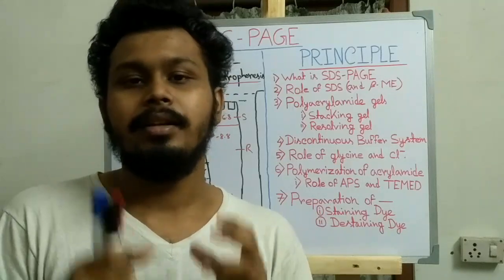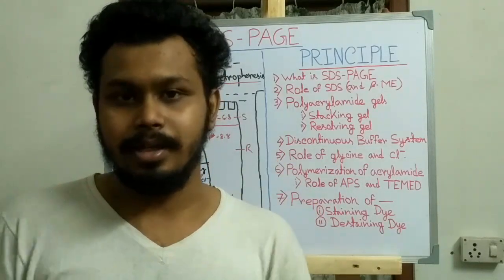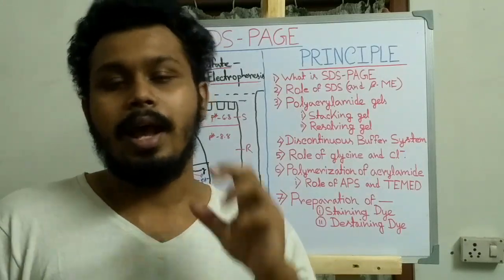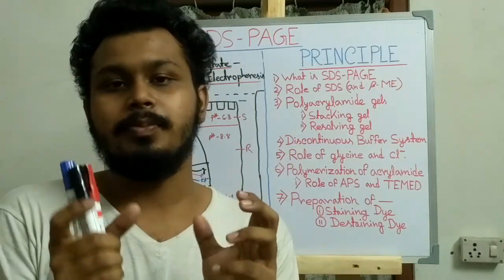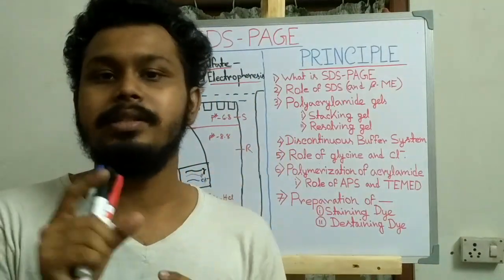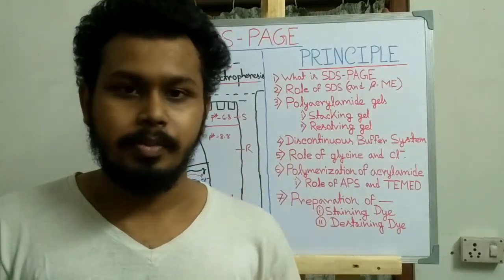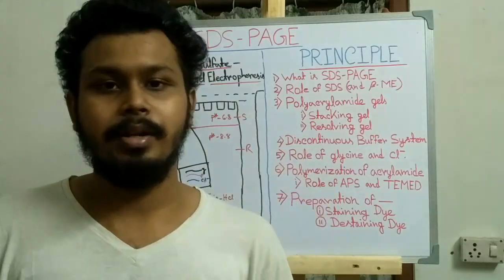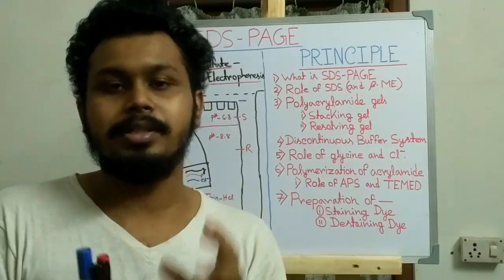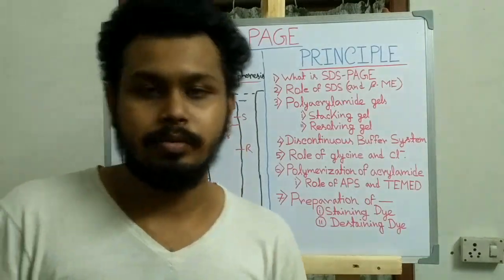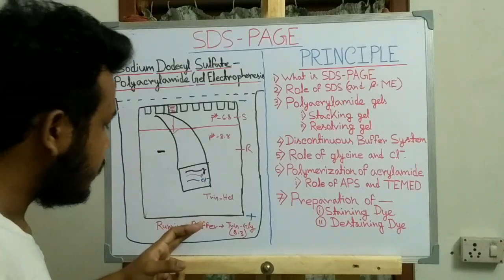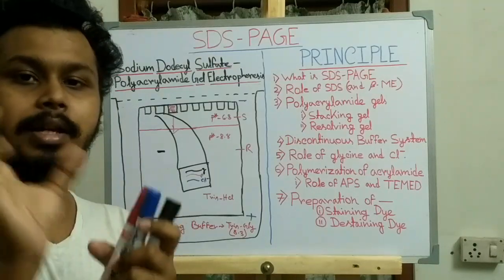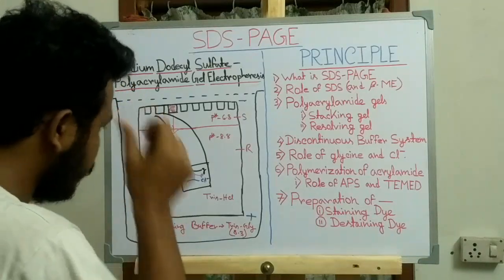Glycine is present in three states at different pH. At low pH (around 2–3), glycine is in its protonated form with a net positive charge. At high pH (around 8–9), glycine is in its deprotonated form with a net negative charge. At an intermediate pH of 6–7, glycine is present in its zwitterionic form, meaning its net charge is zero. In the running buffer the pH is 8.3, so glycine is in its deprotonated, negatively charged form.